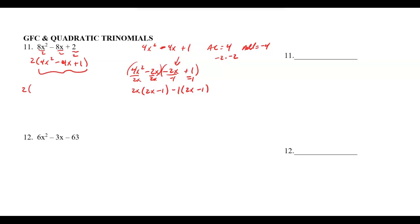Factoring out negative 1 from the second group also gives 2x minus 1. So the full factored form is 2 times (2x minus 1) times (2x minus 1). Remember to bring that GCF of 2 down into your final answer.